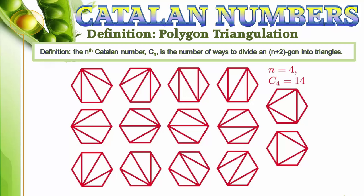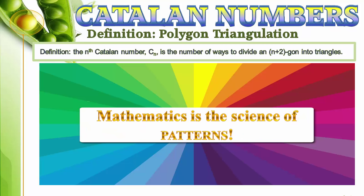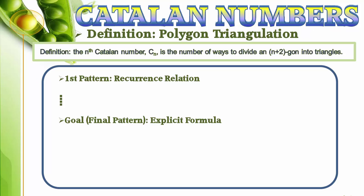So far, our sequence is 1, 1, 2, 5, 14. Mathematics is the science of patterns, so we want to find patterns for the sequence of Catalan numbers. Our ultimate goal is to find an explicit formula for the nth Catalan number in terms of n. No such formula is immediately obvious, but let's see if we can find a simpler pattern, a recurrence relation for the nth Catalan number based on smaller Catalan numbers.